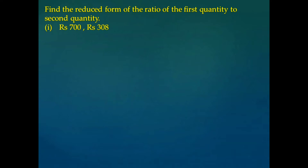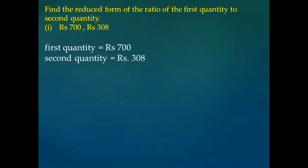Next question is: find the reduced form of the ratio of the first quantity to the second quantity. The first problem is rupees 700 and rupees 308. Here we have to find the ratio of two quantities. The units of those quantities are rupees, so the first quantity is rupees 700 and the second quantity is rupees 308.